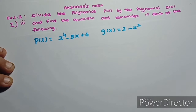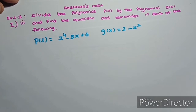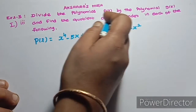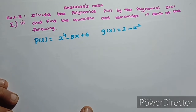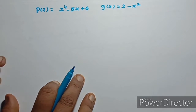Exercise 2.3, first Roman letter, third problem. p(x) is equal to x power 4 minus 5x plus 6. g(x) is equal to 2 minus x square. In this problem, find the quotient and the remainder in each of the following. Now let's do this.